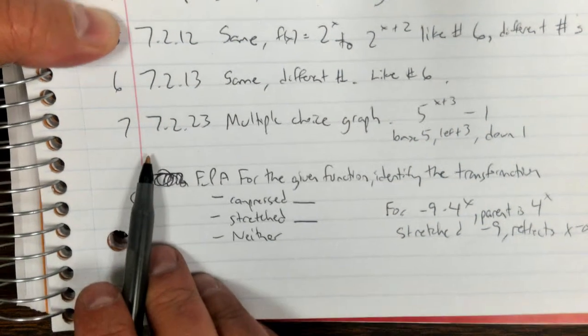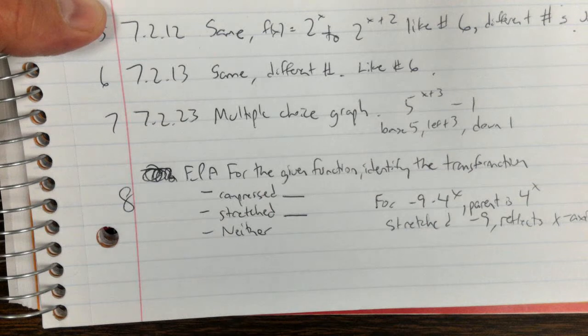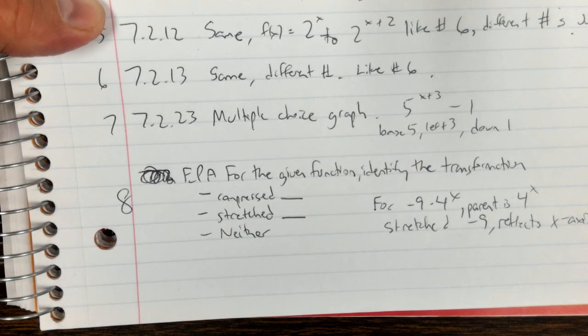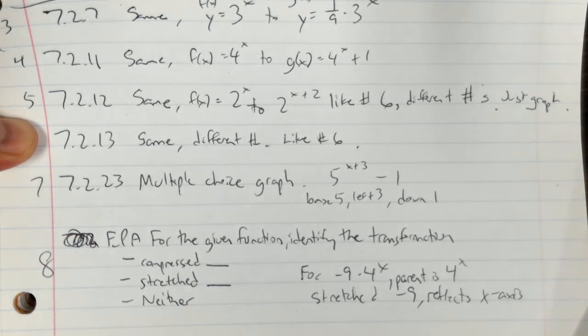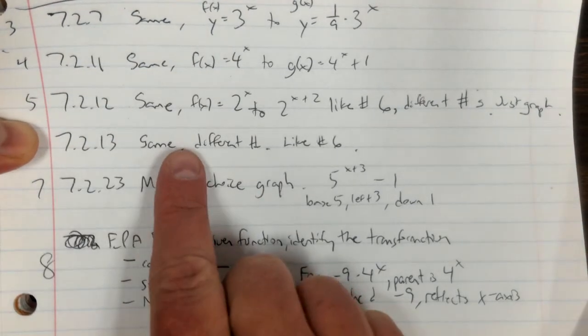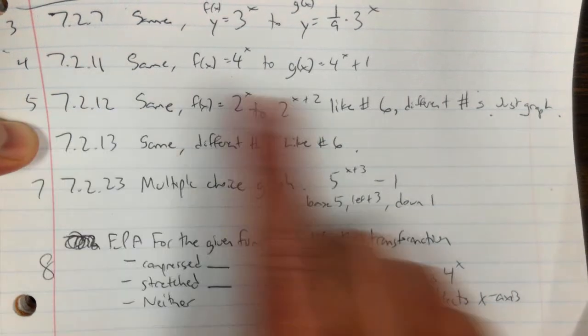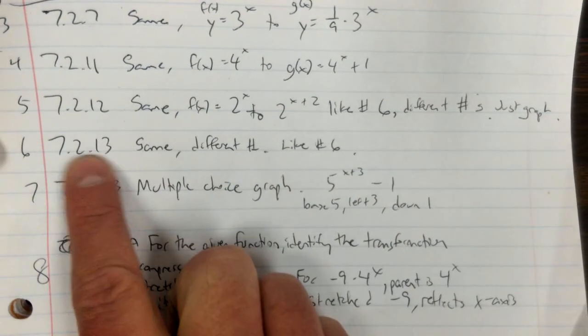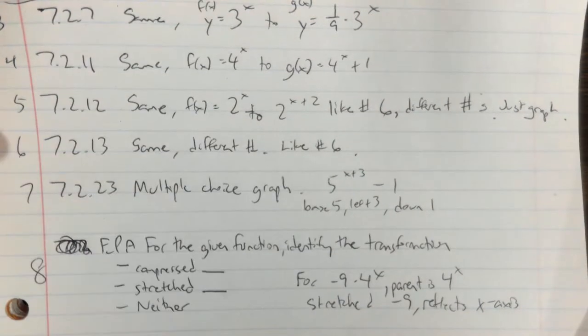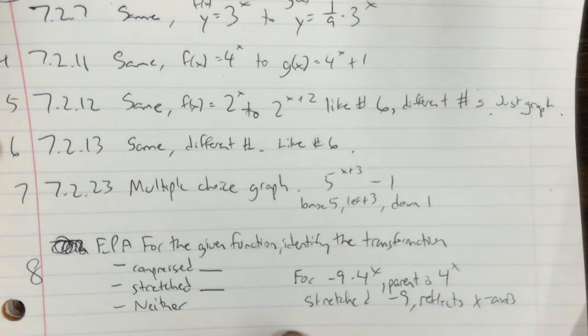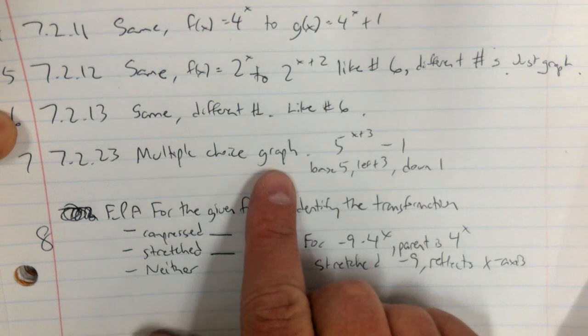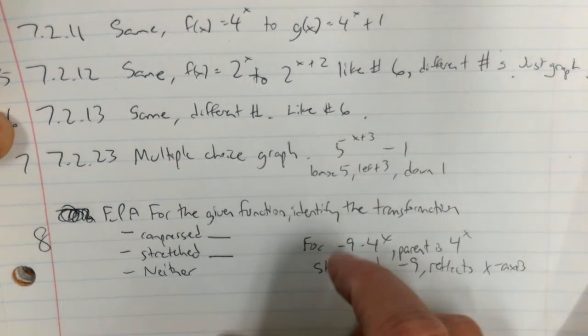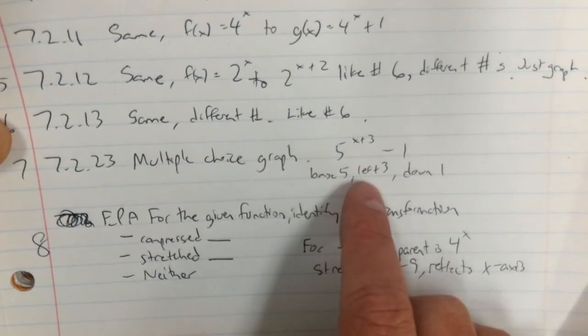Then number 7 is a multiple choice graph. Once again, a lot of these graphing questions are the same. Just on number 5 all you have to do is graph, but on this one, number 6, you have to do all of your pop-up box as well as your domain and range question. Then on number 7, this one is a multiple choice graph, but it has a bunch of different transformations. On mine I had a base of 5 and I went left 3 and down 1, and you just pick the correct graph.